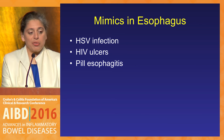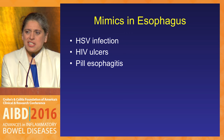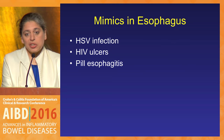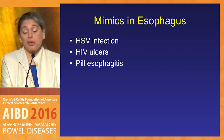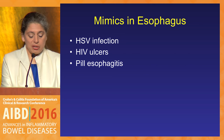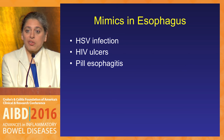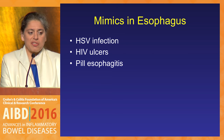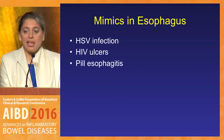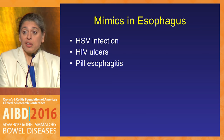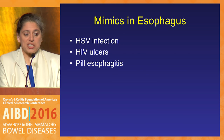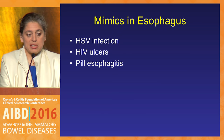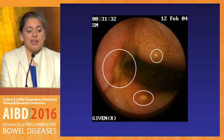In the esophagus, as adult gastroenterologists we don't see esophageal Crohn's very often — it's usually diagnosed in the pediatric population. Our patients will complain of dysphagia on occasion, and if you know that they have Crohn's disease and you see ulcerations in their esophagus, do they suddenly have esophageal Crohn's? Not likely. More likely is HSV infection, HIV ulcers, or pill esophagitis. These are the more common things you're going to see than esophageal Crohn's disease.